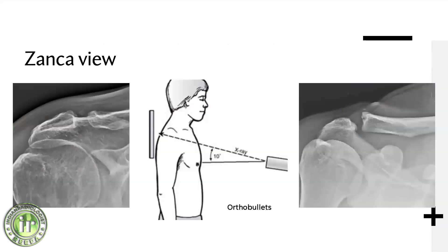A typical view for the acromioclavicular joint is the Zanca view. The reason we get this view is that on a standard image the AC joint is overlapped by the acromion posteriorly, making assessment challenging. By tilting the beam craniocaudally, you can move the AC joint away from the acromion and visualize it clearly. The Zanca view is essentially an oblique view to help you look at the AC joint.